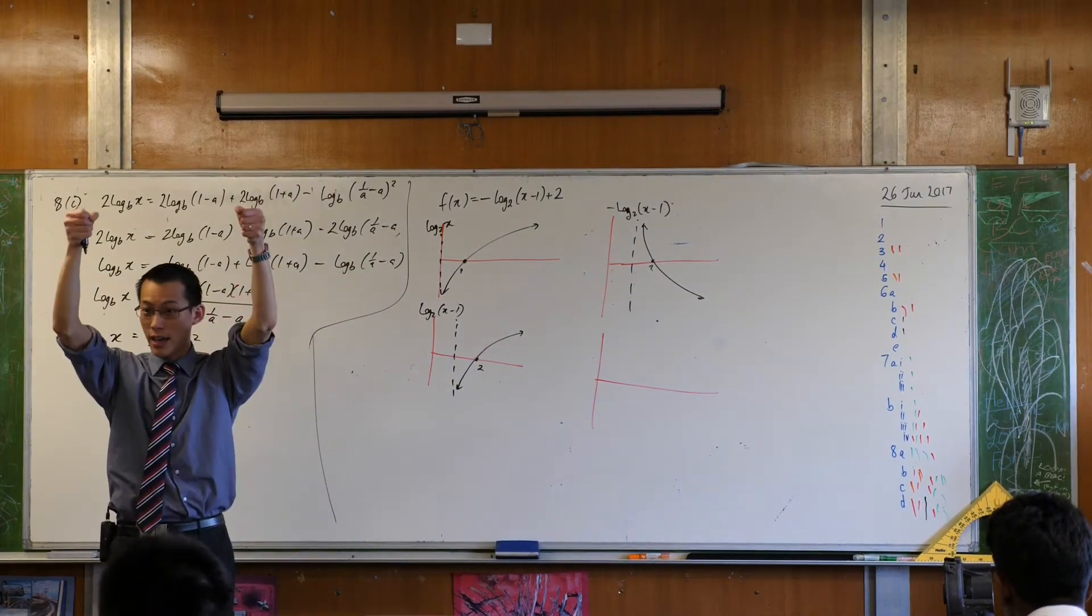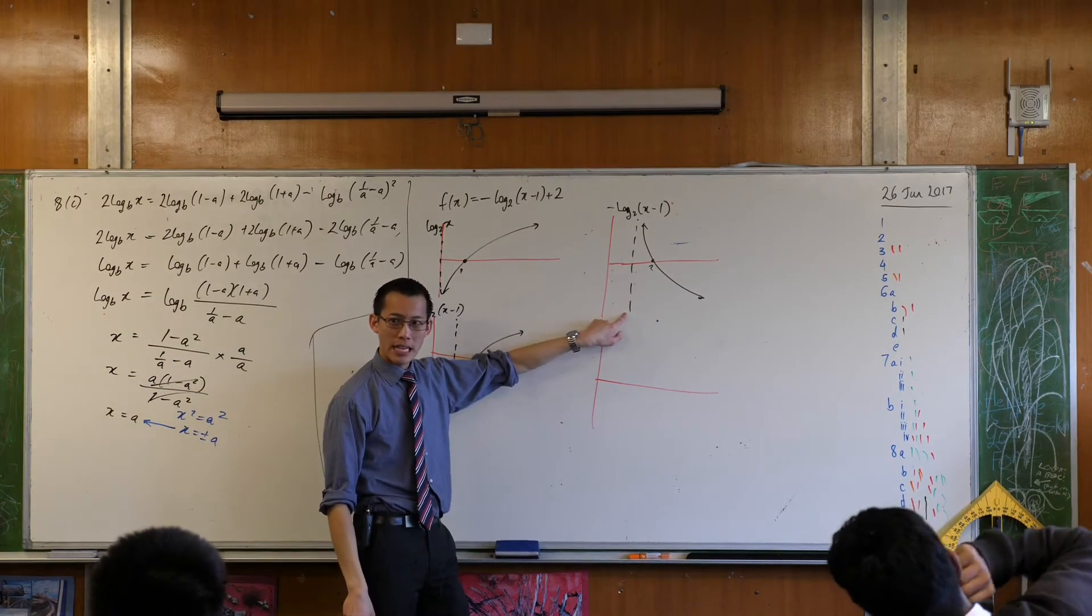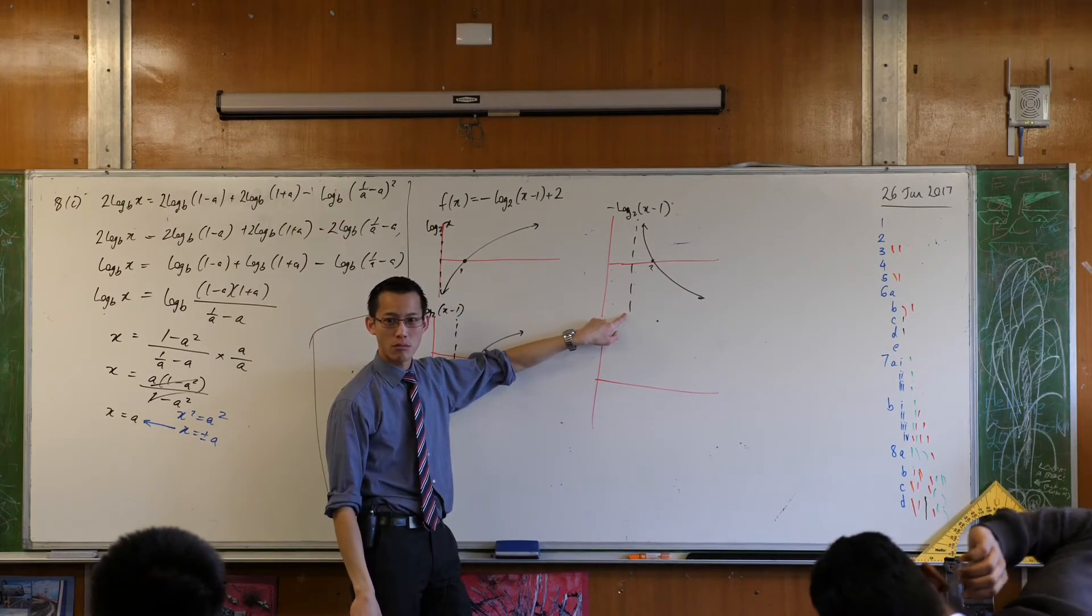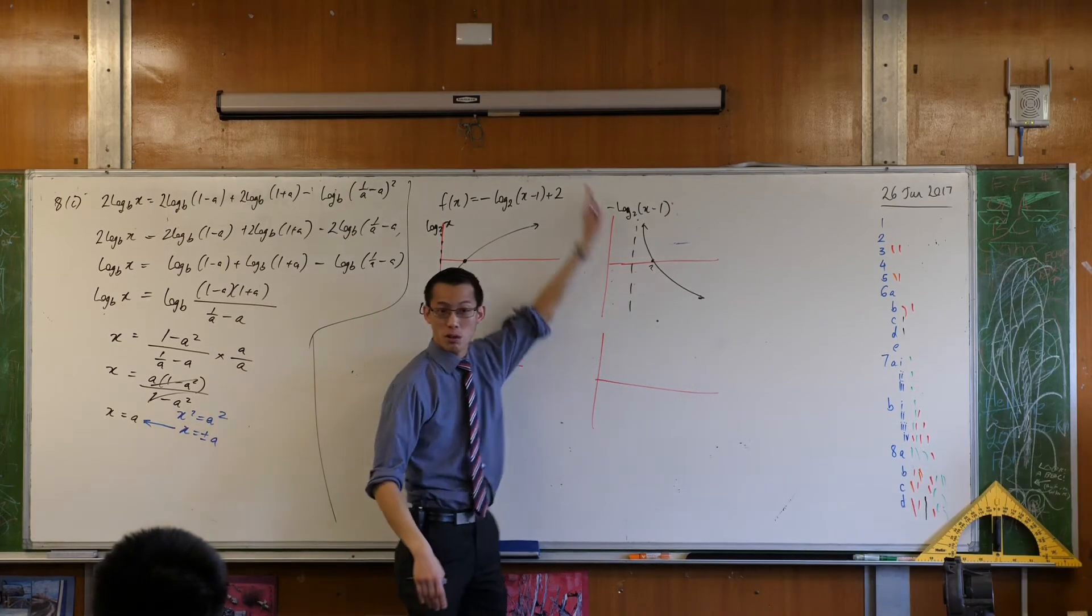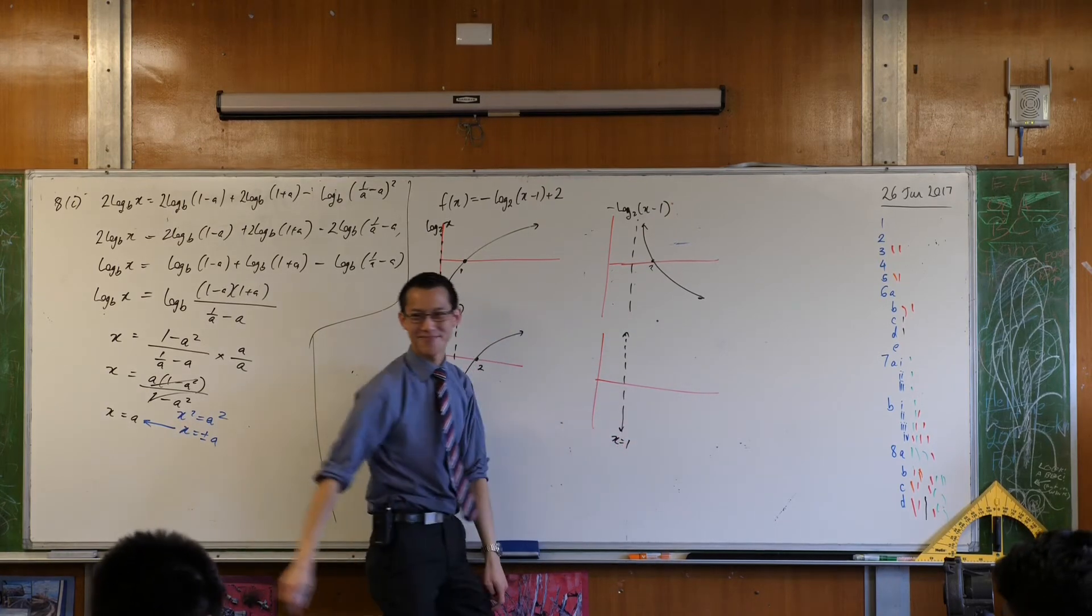It shifts it vertically up 2 units, right? When you take this guy here, where is that going to go, this vertical asymptote? It's going to be in the exact same spot because it goes on forever. So now that this is my last graph, I'm actually going to label it. Okay.